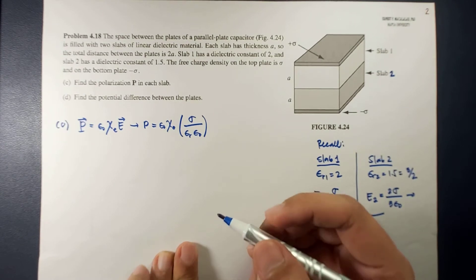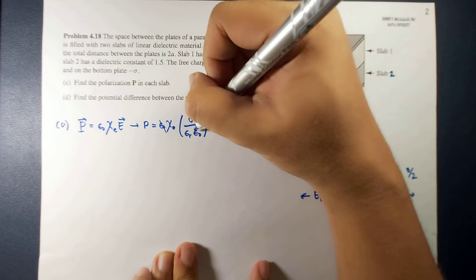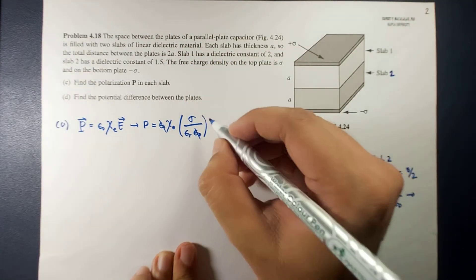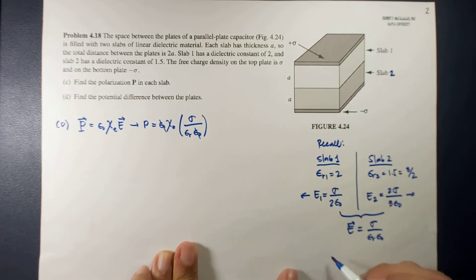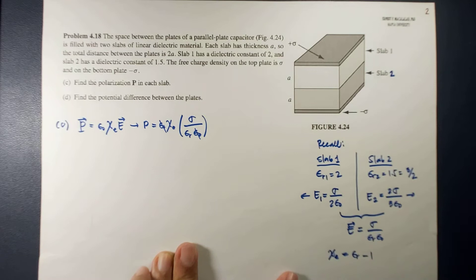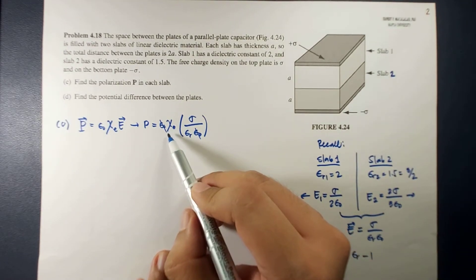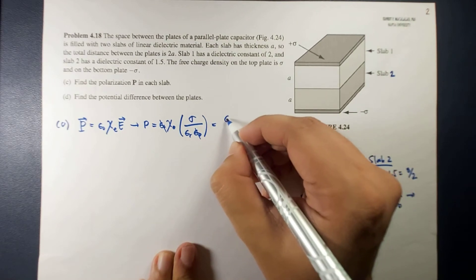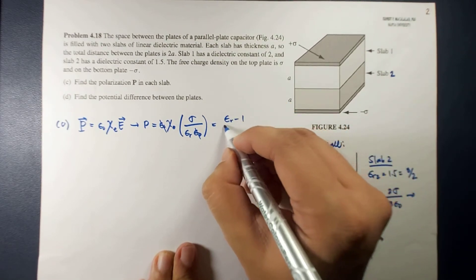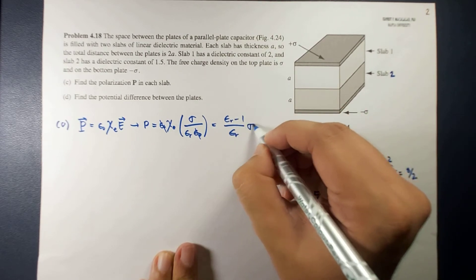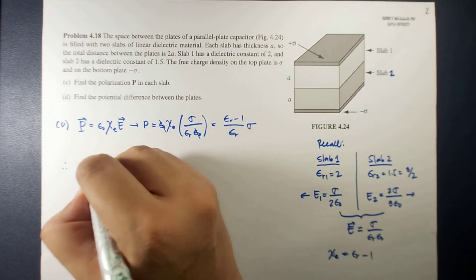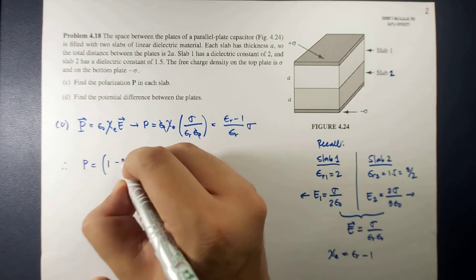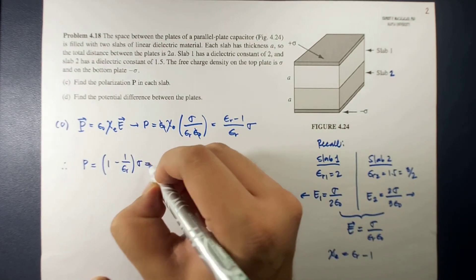Because ε₀ cancels, and noting that χ_E is equal to ε_r minus 1, we get χ_E divided by ε_r equals (ε_r minus 1) divided by ε_r. So the polarization is now equal to (ε_r minus 1) over ε_r times σ, which simplifies to 1 minus 1/ε_r times σ.